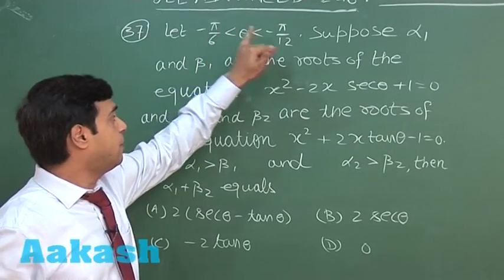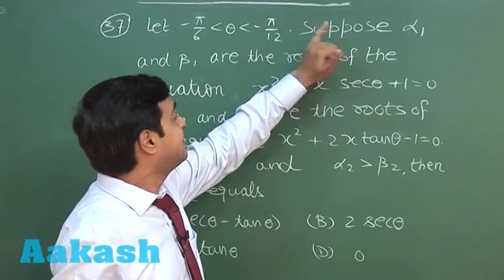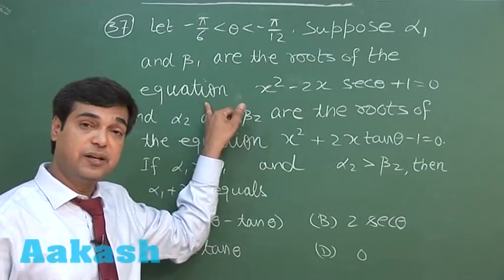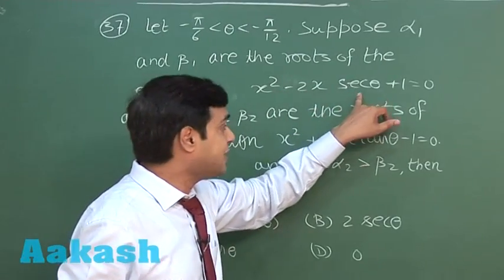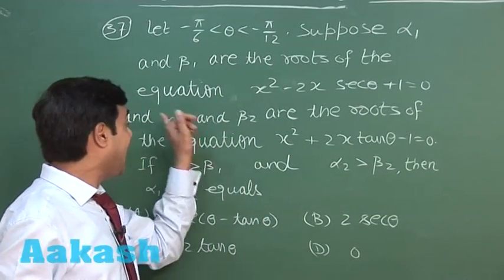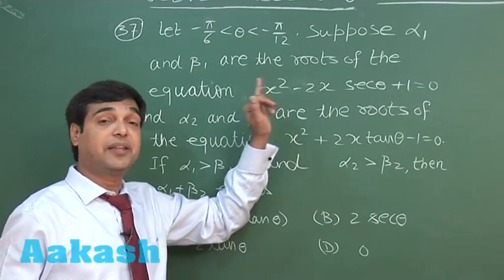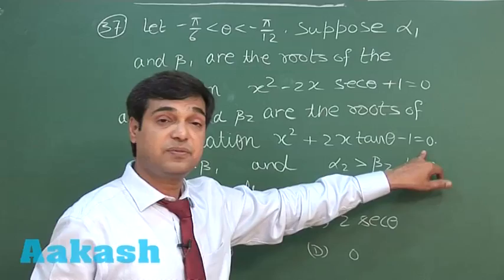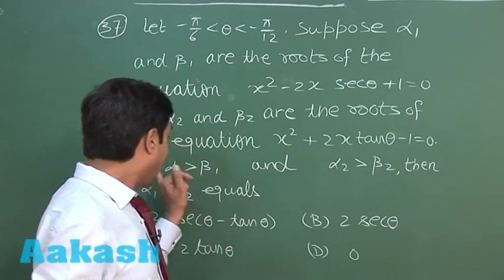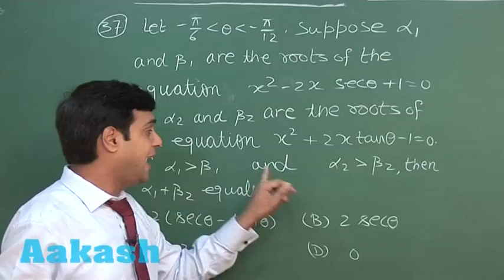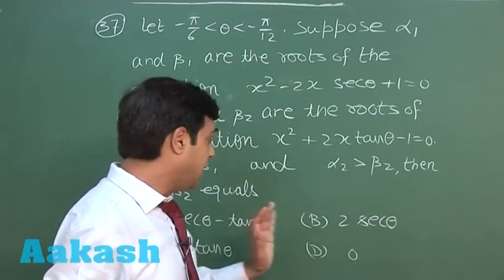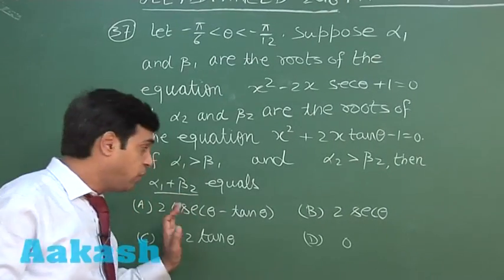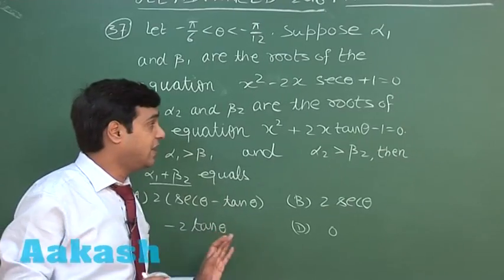Let theta lie in the open interval minus pi by 6 to minus pi by 12. Suppose alpha 1 and beta 1 are the roots of the equation x² minus 2x·secθ plus 1 equals 0, and alpha 2 and beta 2 are the roots of x² plus 2x·tanθ minus 1 equals 0. If alpha 1 is greater than beta 1 and alpha 2 is greater than beta 2, find the value of alpha 1 plus beta 2.